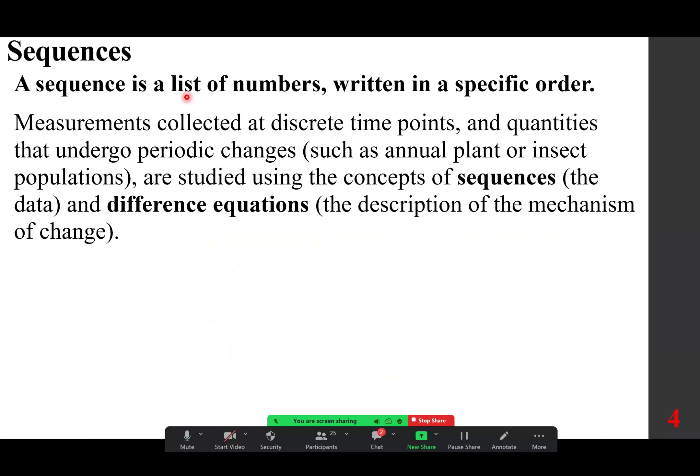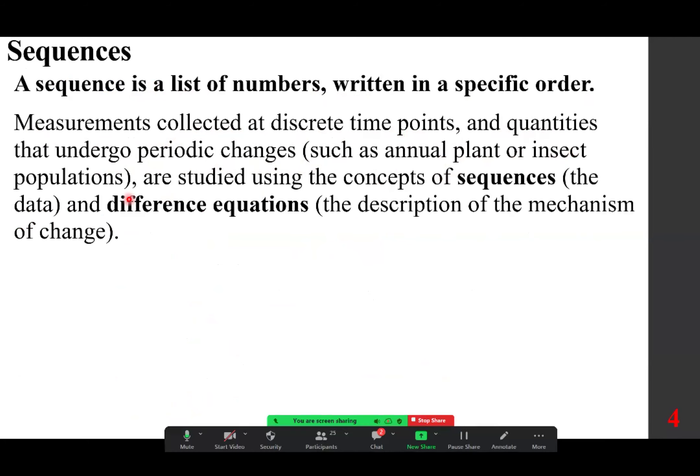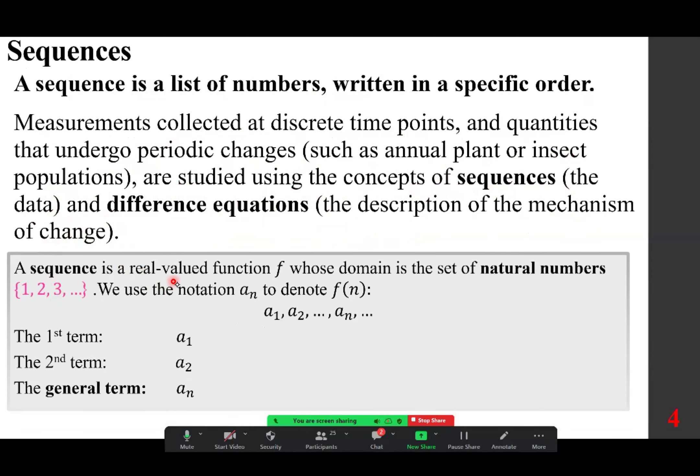A sequence is a list of numbers written in a specific order. Measurements collected at discrete time points and quantities that undergo periodic changes such as annual plant or insect populations are studied using the concepts of sequences, the data and difference equations, the description of the change, and a sequence is a real valued function f whose domain is the set of natural numbers. What are natural numbers? 1, 2, 3 goes to infinity.